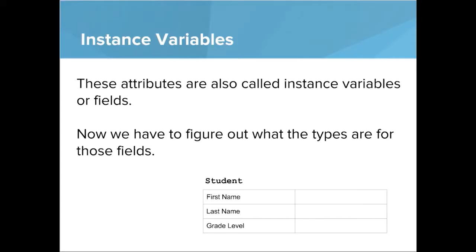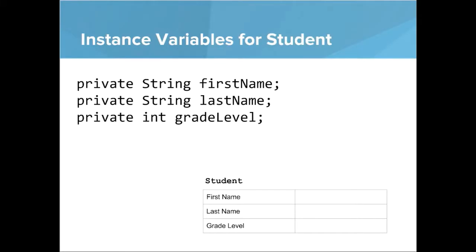Now we have to figure out what the types are for those fields. The first name of the student is a String, the last name of the student is a String, and the grade level of the student is an int. So the instance variables are written as: private String firstName, private String lastName, and private int gradeLevel. The reason we have private is because we want to keep these instance variables within our class — we want to keep them protected.